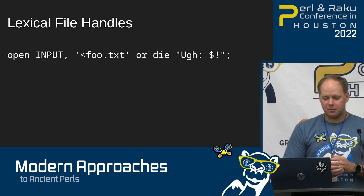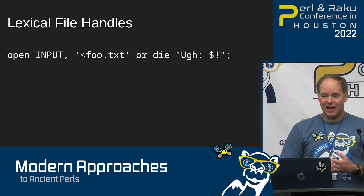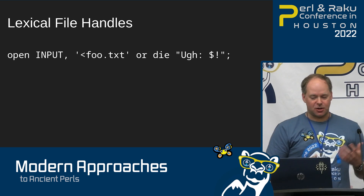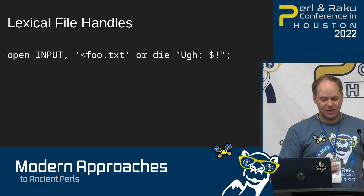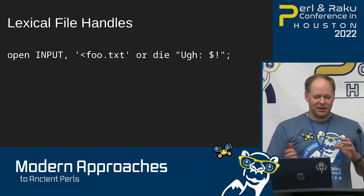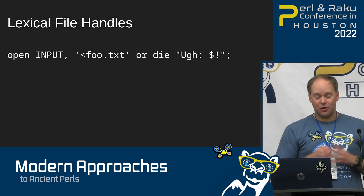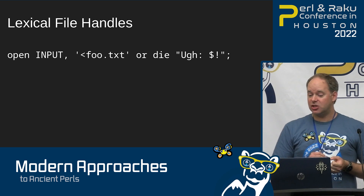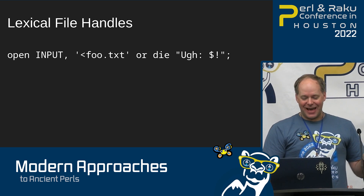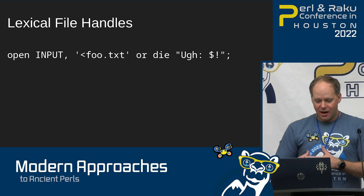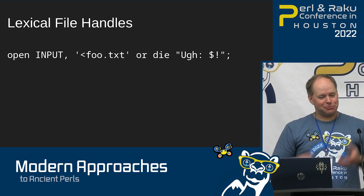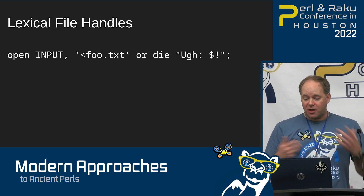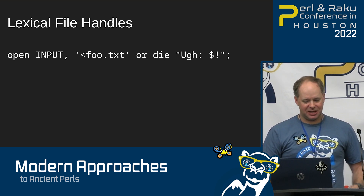First, let's talk about lexical file handles. Before Perl 5.8, we could only use bareword file handles. You'll even find code written for more recent Perls that still uses bareword file handles. The problem with bareword file handles is that they're package-level. If you use the same file handle name somewhere, it's really the same file handle — it's not exactly global, but it's still trouble. You can easily run into trouble when someone else is just as creative as you are when naming their file handles.